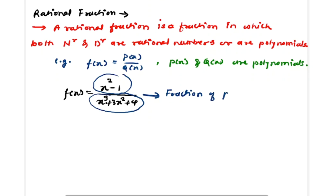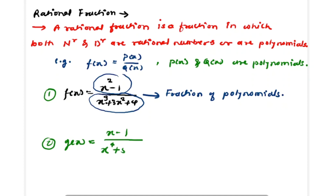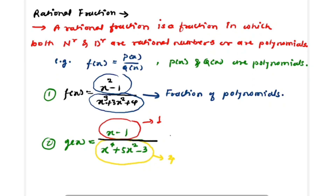Another example: g(x) = (x − 1) / (x⁴ + 5x² − 3). Here, x − 1 is a polynomial of degree 1, and x⁴ + 5x² − 3 is a polynomial of degree 4. Since both numerator and denominator are polynomials, this is also a fraction of polynomials. So it is now clear what polynomials, degree of polynomials, and fractions of polynomials mean.